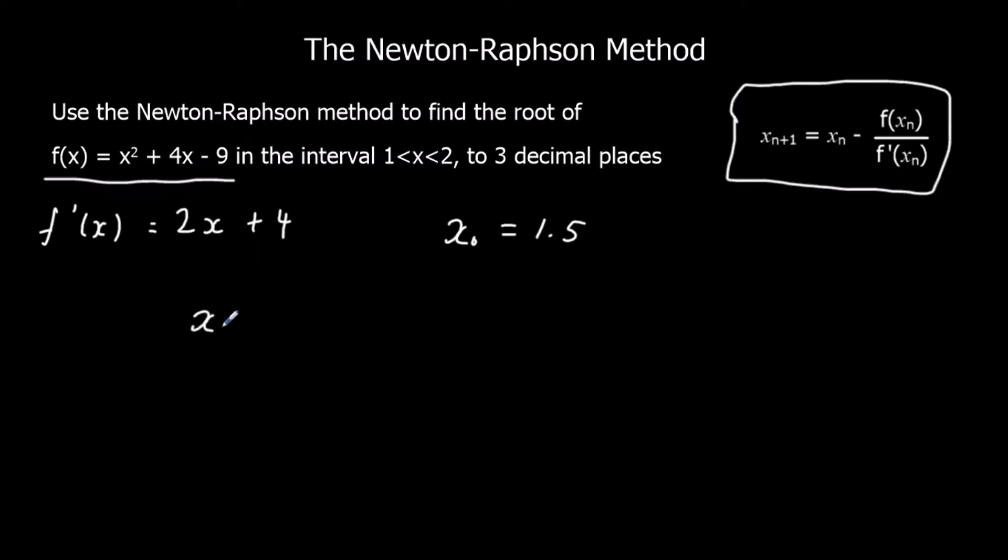If we start with x₀ as 1.5. To find x₁, xₙ₊₁ is x₀, which is 1.5, minus f(1.5), which is 1.5² + 4(1.5) - 9. Just substituting 1.5 into f(x) over f'(1.5).